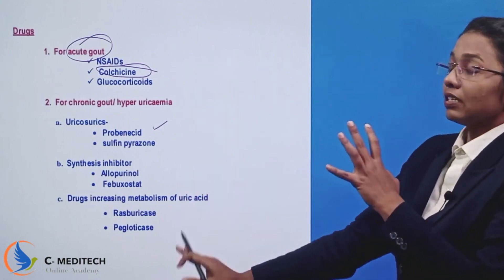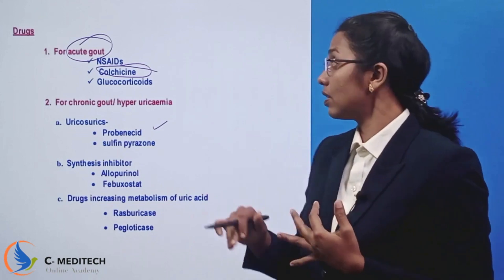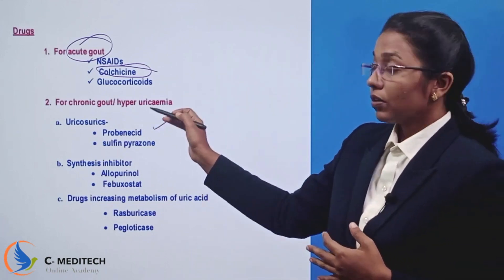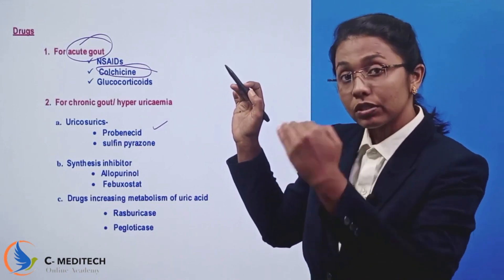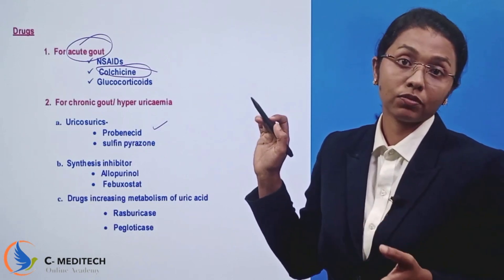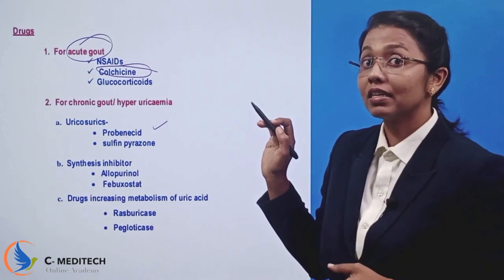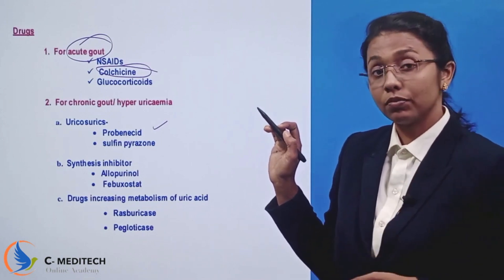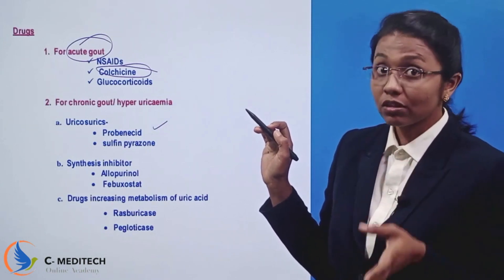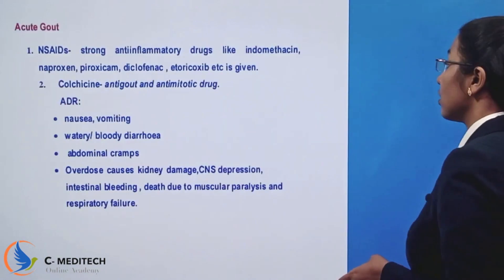To summarize: drugs related to gout — for acute gout we use NSAIDs, corticosteroids, and colchicine. For chronic gout, uricosuric agents — probenecid and sulfinpyrazone — promote excretion. Uric acid synthesis inhibitors are allopurinol and febuxostat. For uric acid metabolism, the parenteral formula includes rasburicase and pegloticase.